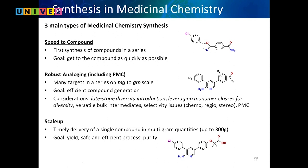When making compounds for medicinal chemistry, there are typically three types of chemistry we do. First is making a lead compound — the first compound that hits a certain enzyme. In this case it may be an amide — these are actual compounds — a MAP4K4 inhibitor that we were looking at for heart disease.